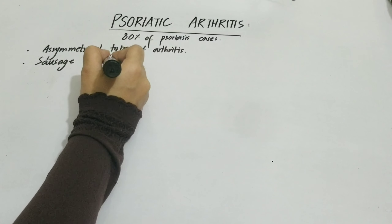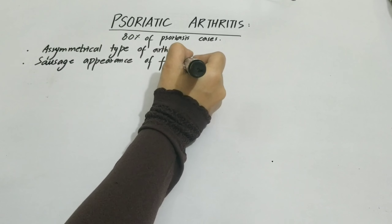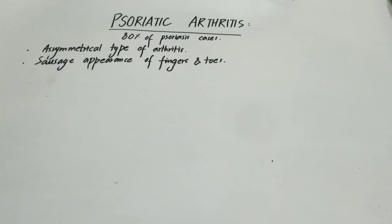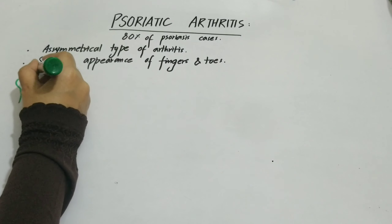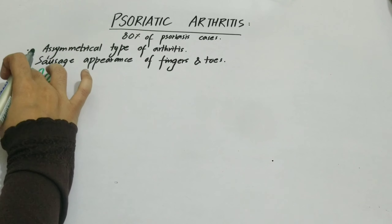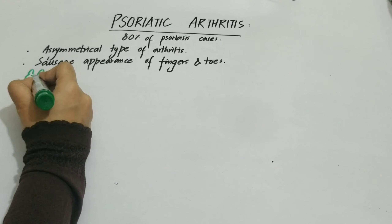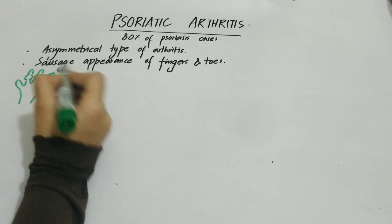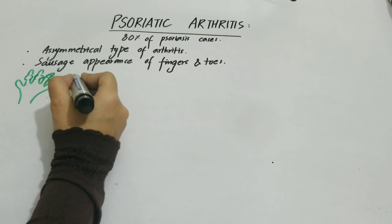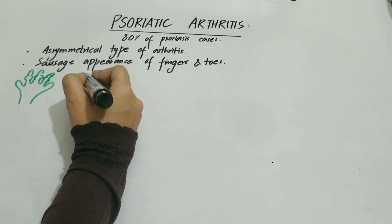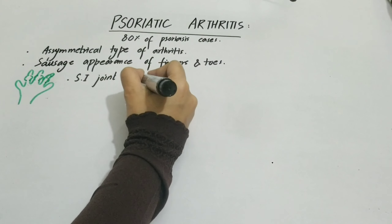We have asymmetrical type of arthritis, meaning it is not necessarily in both limbs. The fingers show a sausage-like appearance of fingers and toes. In sausage appearance, we have swelling of the DIP and PIP joints — it seems like there are nodes. This sausage appearance of fingers and toes is the most important hallmark of psoriatic arthritis for case identification.